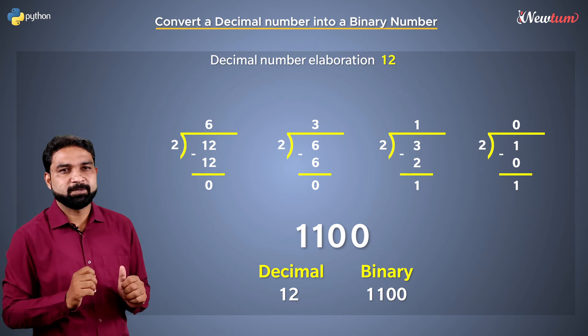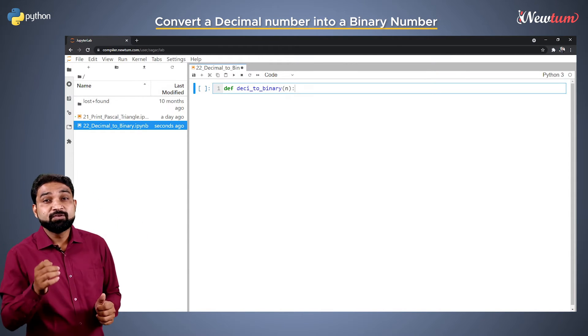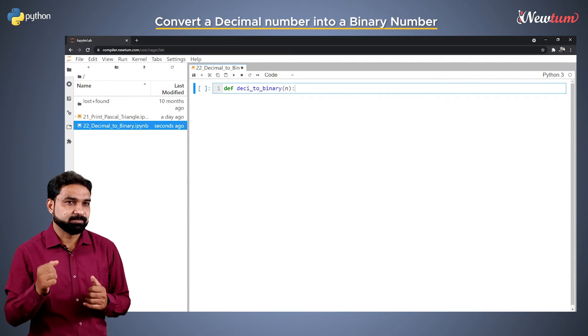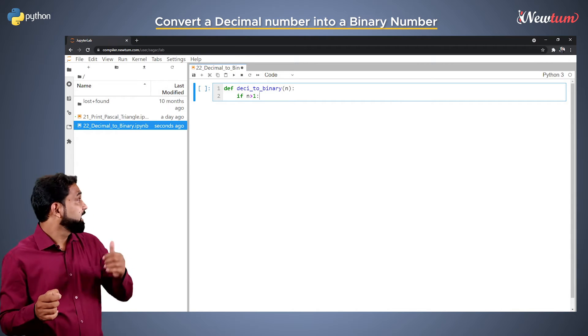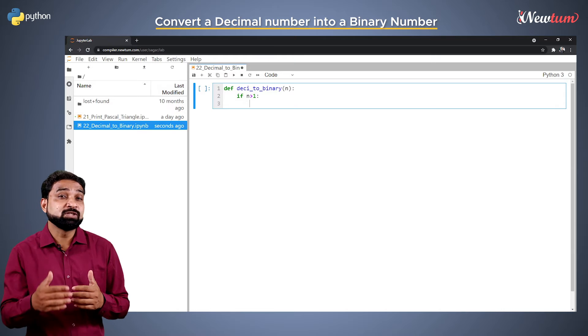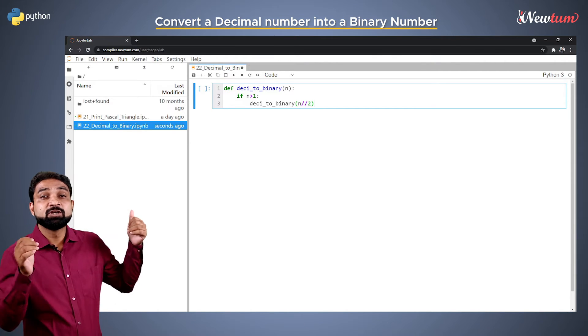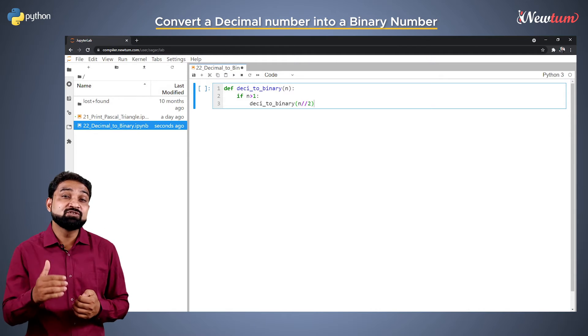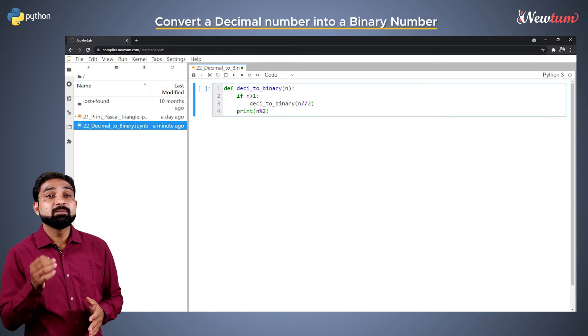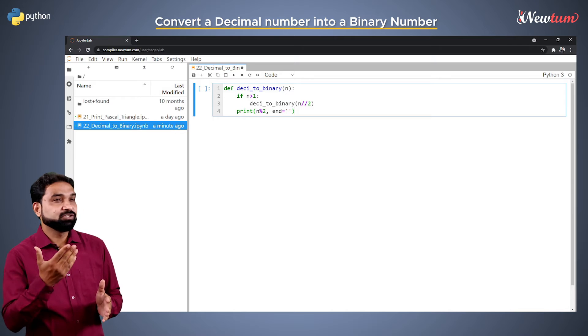Let's write a program for this. We will write a recursive function deci_to_binary which will be executed again and again till the value of n is greater than 1. Write an if statement with a condition n greater than 1 and inside the indent of this condition, call the same function again and pass the parameter n//2. That is our floor operator which gives the quotient. After the condition, print the remainder that is n mod 2 with the end character as space. Well, our function is ready.